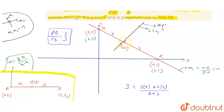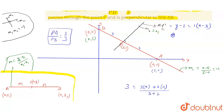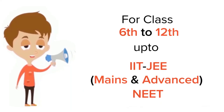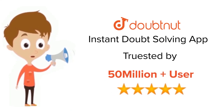Now we know the slope of the required line (m2 = 1) and a point on it (3, 2). The equation of the line will be y - y1 = m(x - x1), so y - 2 = 1·(x - 3), which gives x - y - 1 = 0. This is the required solution. For Class 6 to 12, IIT-JEE and NEET level, trusted by more than 5 crore students — download DoubtNet today.